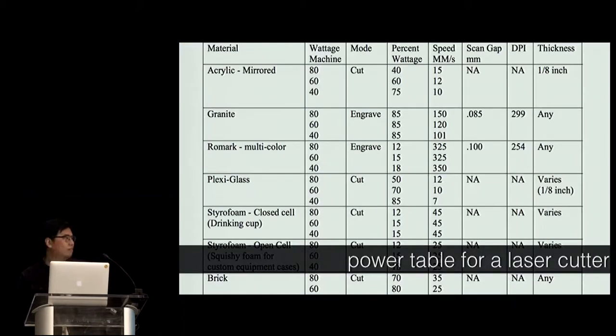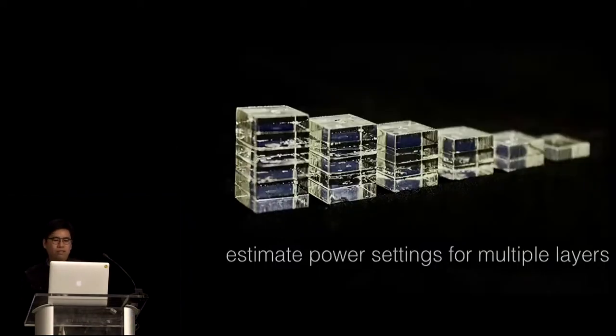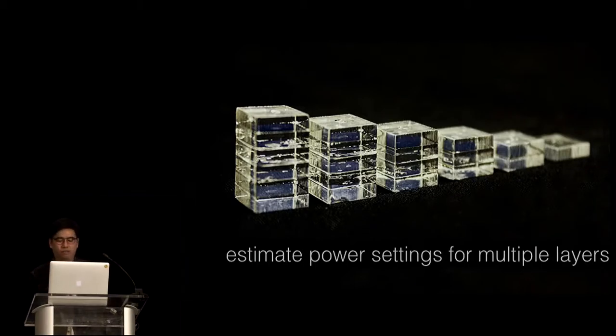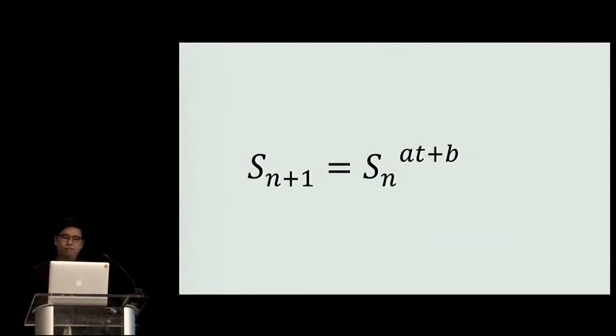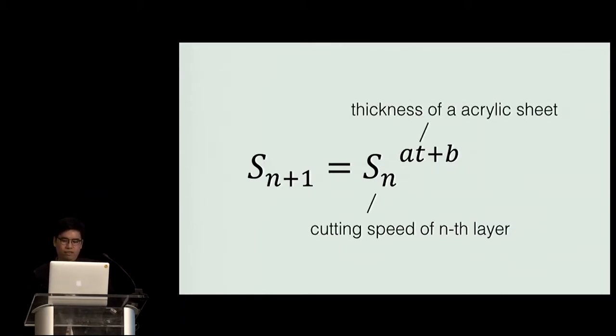It's that when using laser cutter, usually we consult our power table for the power and speed setting for different material with different thickness. Right? But here, we have a material that stacks together. And there's no such setting table anymore. That means we have to create one on our own. And to minimize the fabrication time, we always set the power to 100%. And we only control the cutting speed. So, here, Sn is the cutting speed of the nth layer. T is the thickness of a single layer. And what we're going to do is we're going to estimate A and B. So, note that we use the recursive form here. Because we assume that as the laser goes through the top layers, there will be a specific portion of energy lost when the laser goes through all those layers. Because of the reflection, defocus, and some residuals in the top layers.